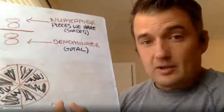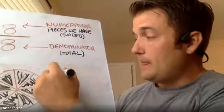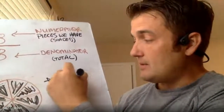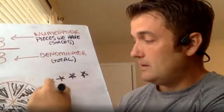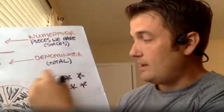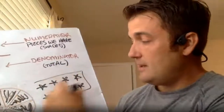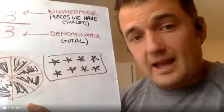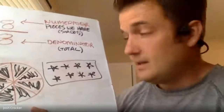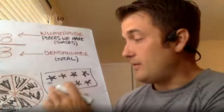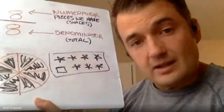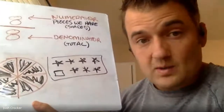We can also do this with a set. Of this set, I could say that eight-eighths are stars. Whereas if I threw in a different one, now only seven-eighths are stars because one-eighth is a square.